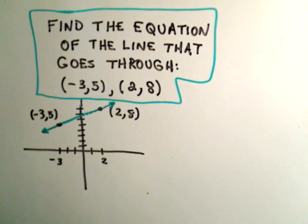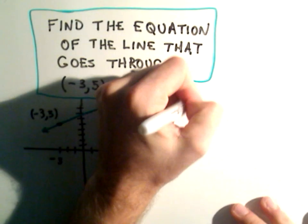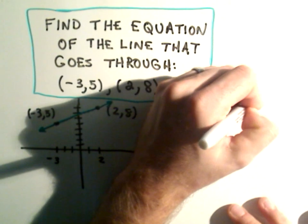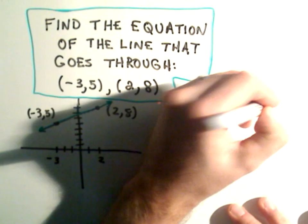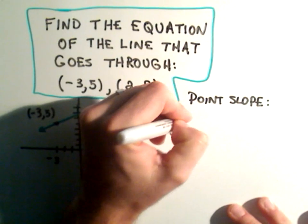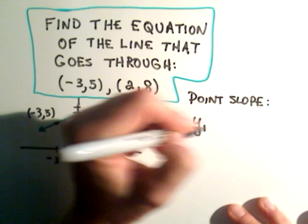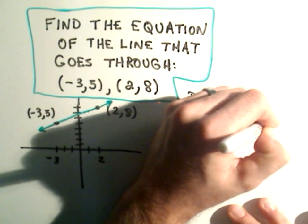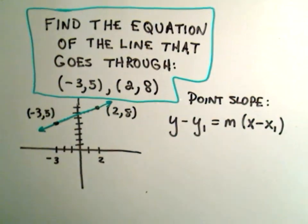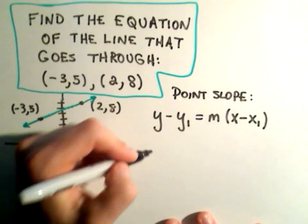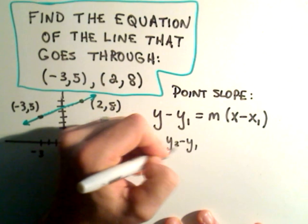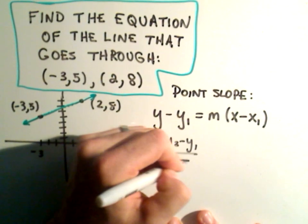So point-slope form simply says the following. So point-slope form. And if you remember one equation of a line, remember this one. So it's y minus y1 equals m times x minus x1. Okay, and the way to remember this, if you remember the slope, it's y2 minus y1 over x2 minus x1.